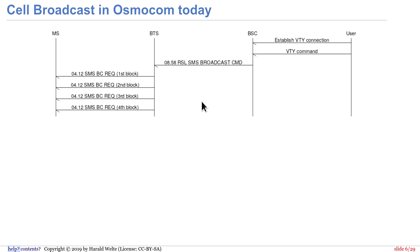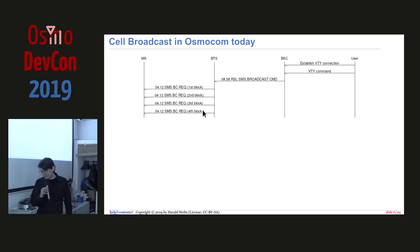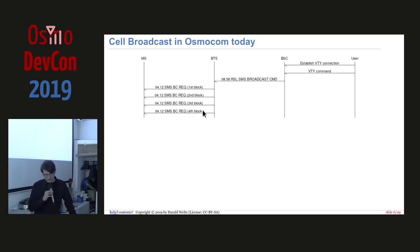What does Osmocom have today? It's rather simplistic. There's no CBC, no CBSP — just a VTY command in the BSC as a proprietary interface, by which you can insert a hex dump of an SMS cell broadcast message. This triggers a single SMS broadcast command to the BTS, which handles transmission. It used to work, but in the absence of testing it broke over time. Some parts were fixed for certain BTS models, and support was added for OsmoBTS-TRX, but it's still not 100% working.